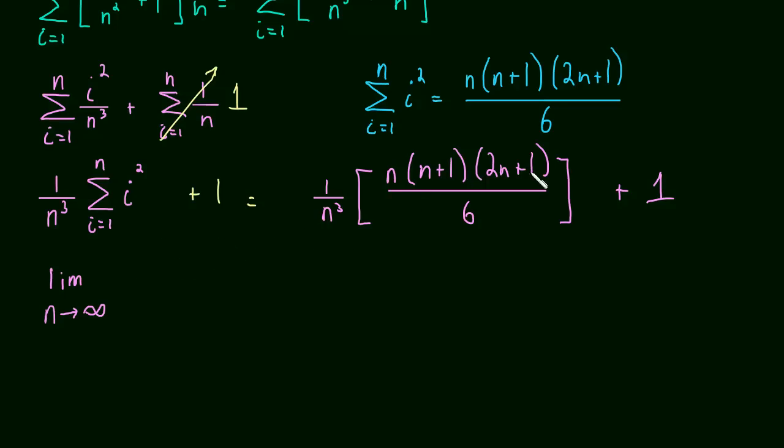and then that distributed to 2n plus 1. That all simplifies to 2n cubed plus 3n squared plus n all over. And then 1 over n cubed distributes to this 6. So that's over 6n cubed plus 1.